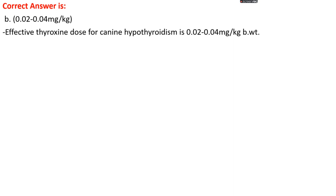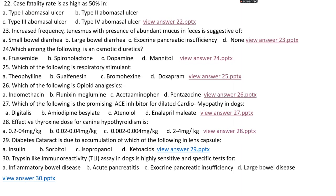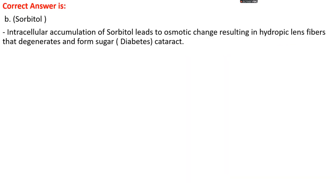Effective thyroxine dose for canine hypothyroidism is 0.02 to 0.04 mg/kg body weight. Question number 29. Diabetic cataract is due to accumulation of which of the following in lens capsules? Options A, insulin; options B, sorbitol; option C, isopropanol; options D, ketoacids. The right answer is option B, sorbitol. Intracellular accumulation of sorbitol leads to osmotic changes resulting in hydropic lens fiber degeneration, forming a sugar (diabetic) cataract.